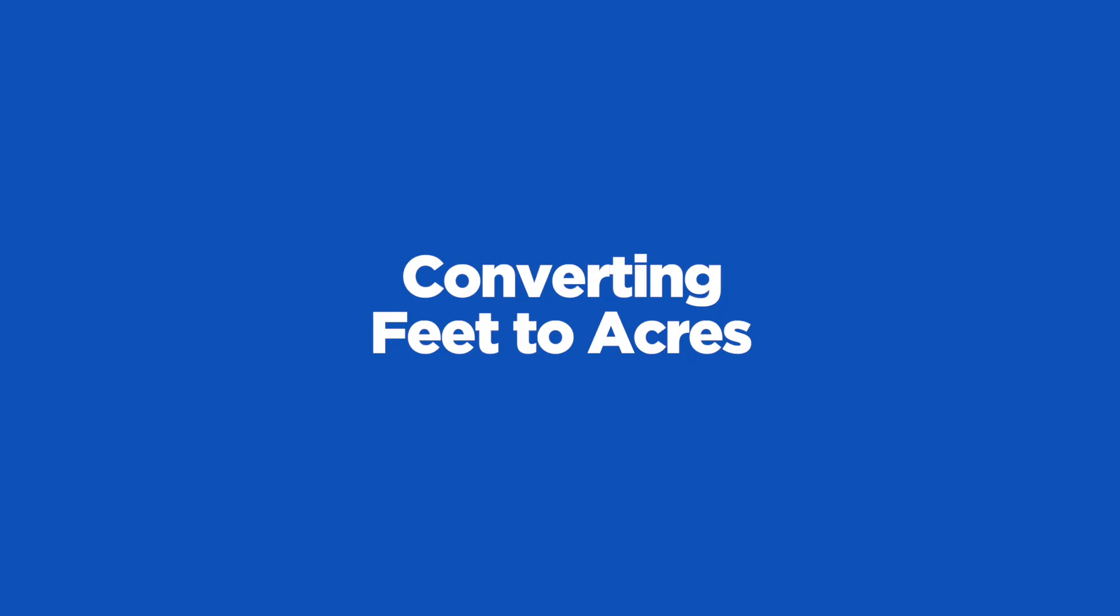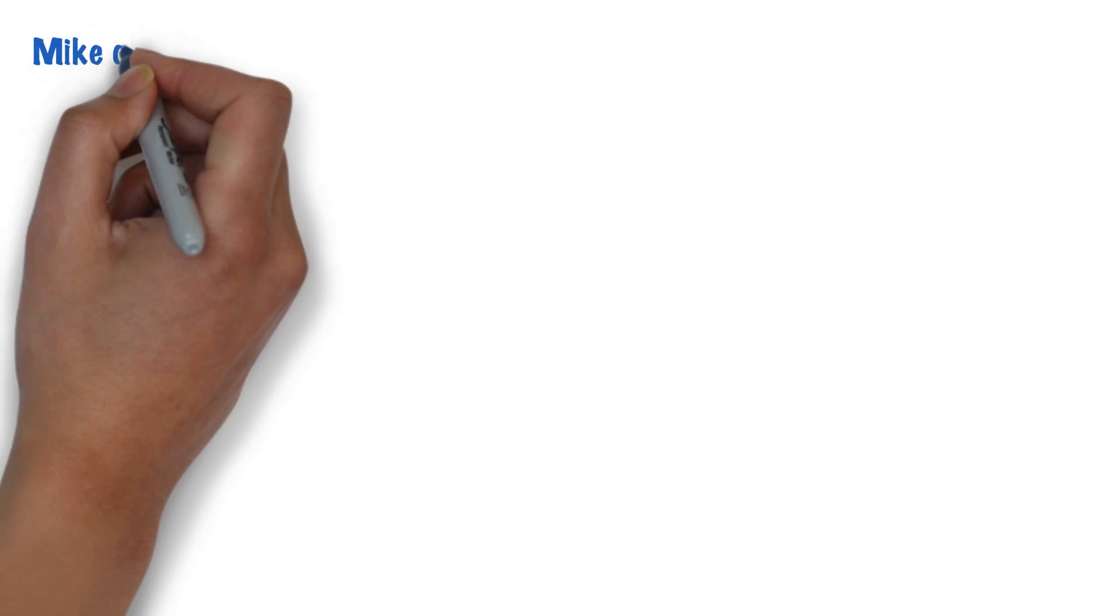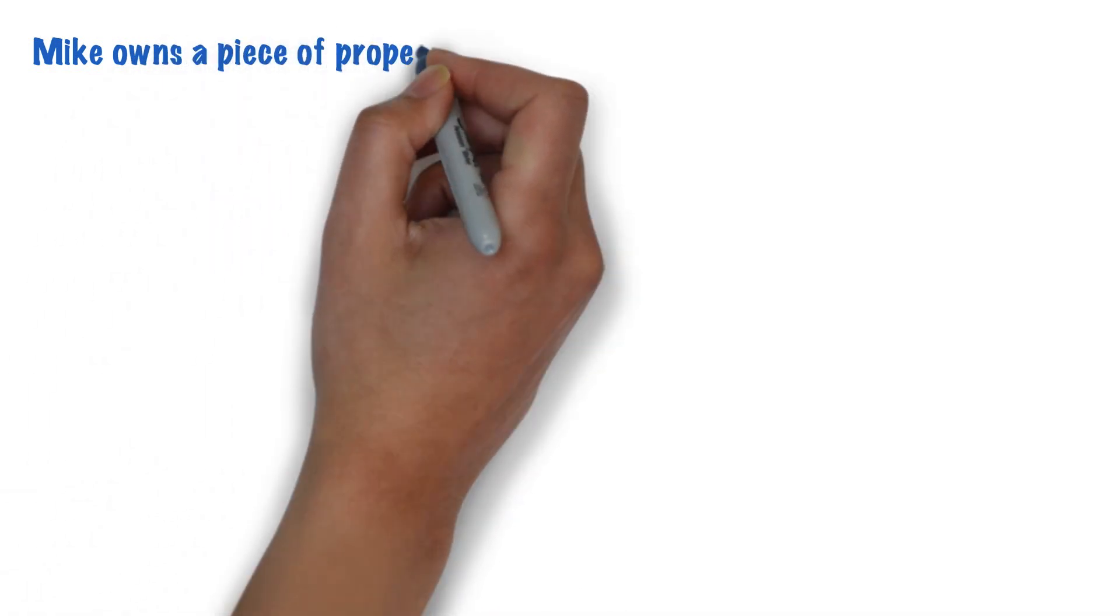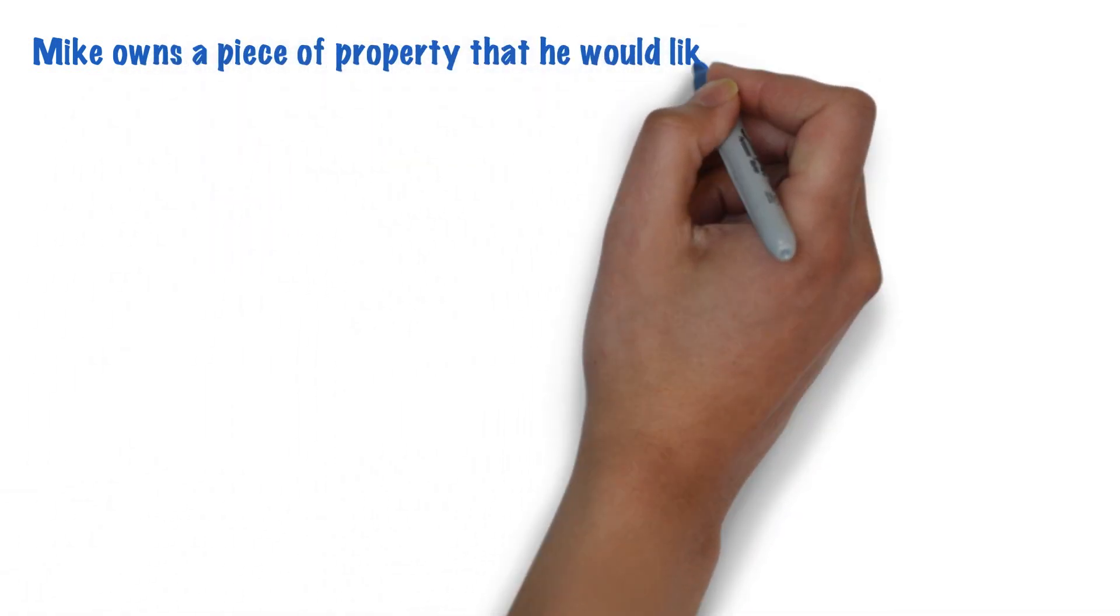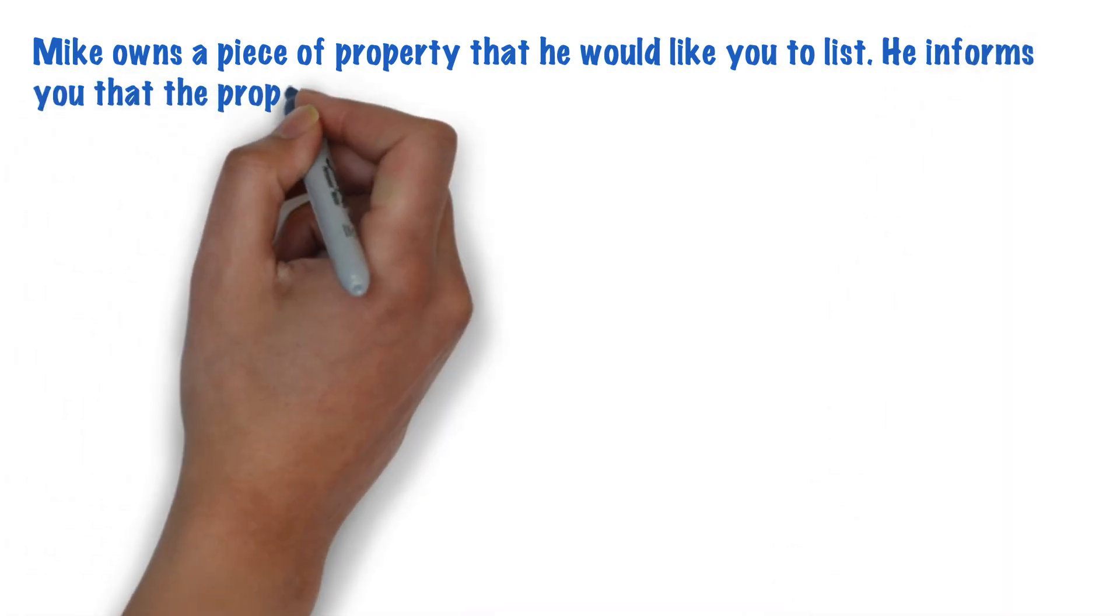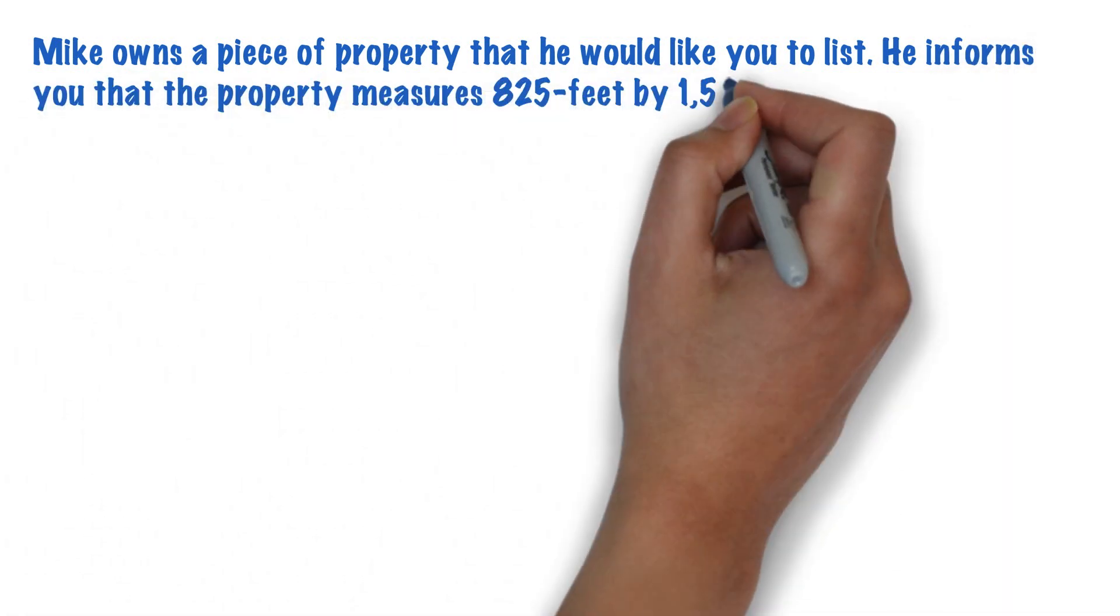A common question on the Florida real estate exam will ask you to calculate how many acres a person owns, giving you only the dimensions of the parcel in feet. Here's an example: Mike owns a piece of property that he would like you to list. He informs you that the property measures 825 feet by 1,500 feet. How many acres does Mike own?